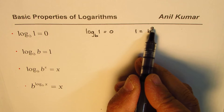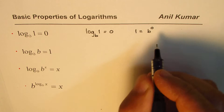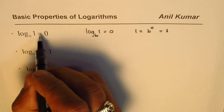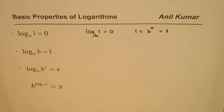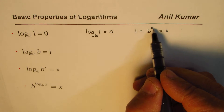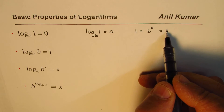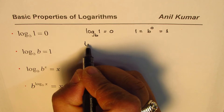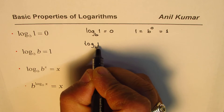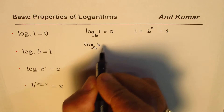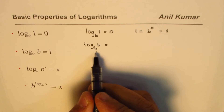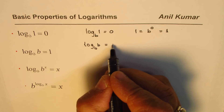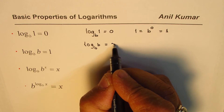As you know, anything to the power of 0 is always 1. That is how you get this property — anything to the power of 0 is 1. Now for the second property, if we convert log_b(b) to exponential form, let the result equal any number x.